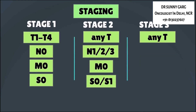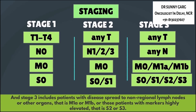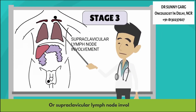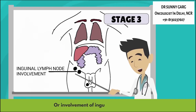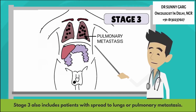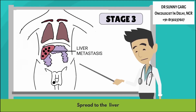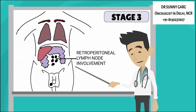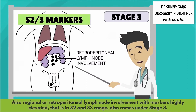Stage 3 includes patients with disease spread to the non-regional lymph nodes or other organs (M1A or M1B), or those with highly elevated markers (S2 or S3). This includes mediastinal, supraclavicular, or inguinal lymph node involvement, spread to the lungs, liver, brain, or bones. Regional or retroperitoneal lymph node involvement with markers highly elevated in the S2 or S3 range also comes under stage 3.